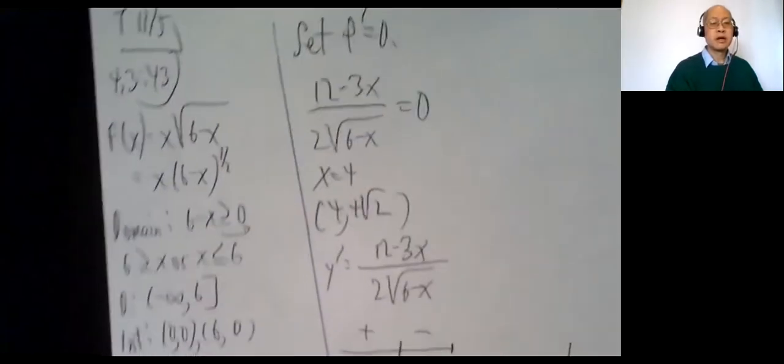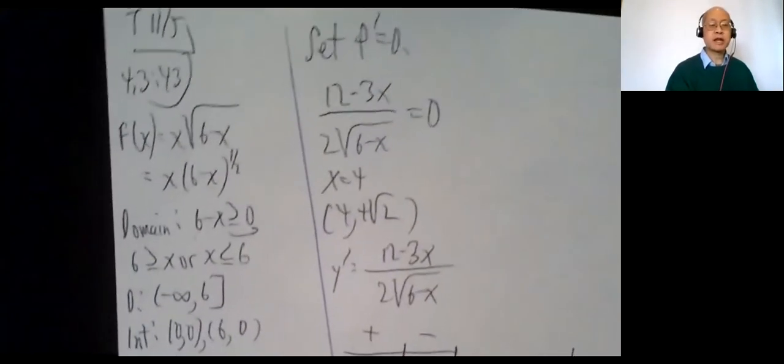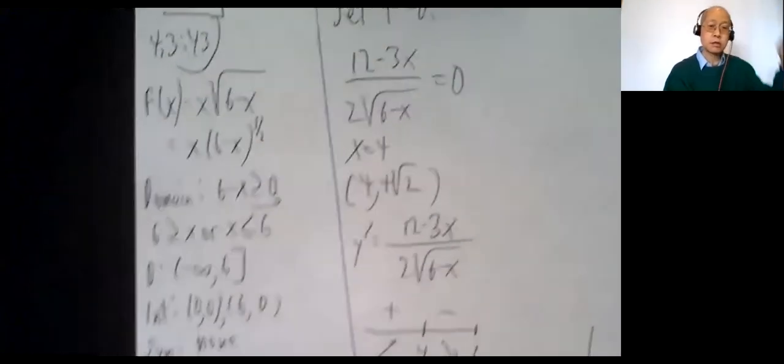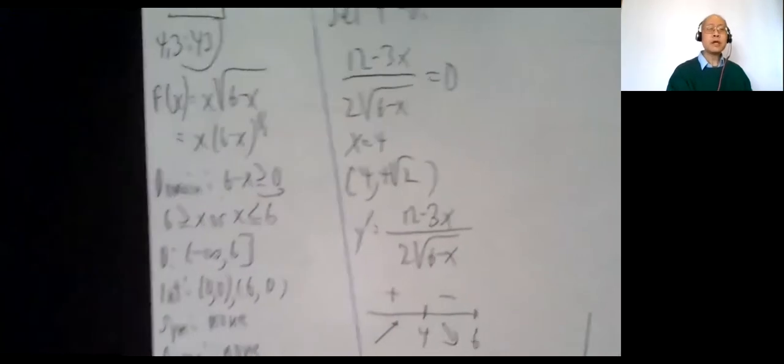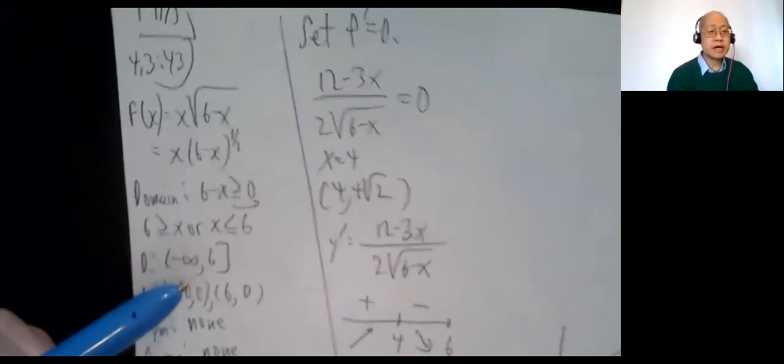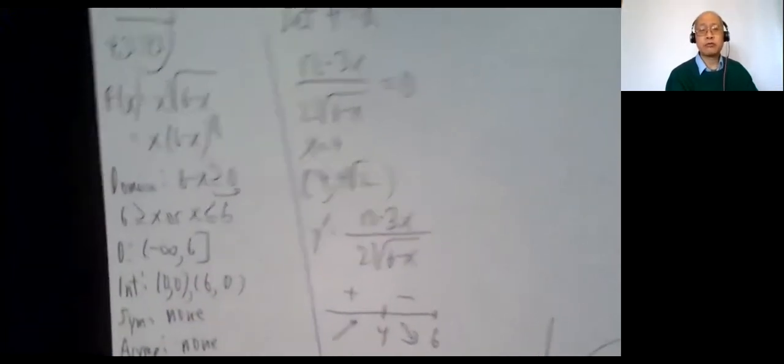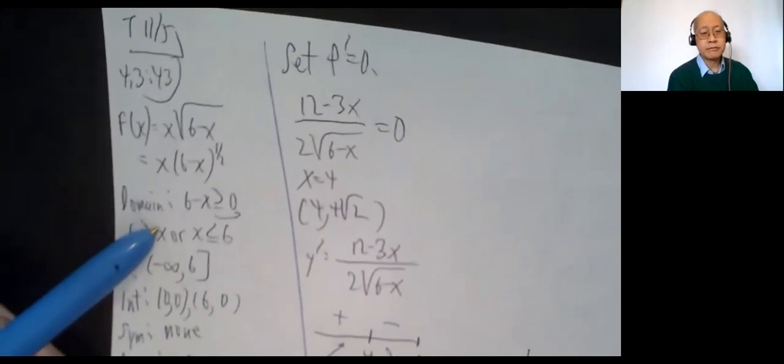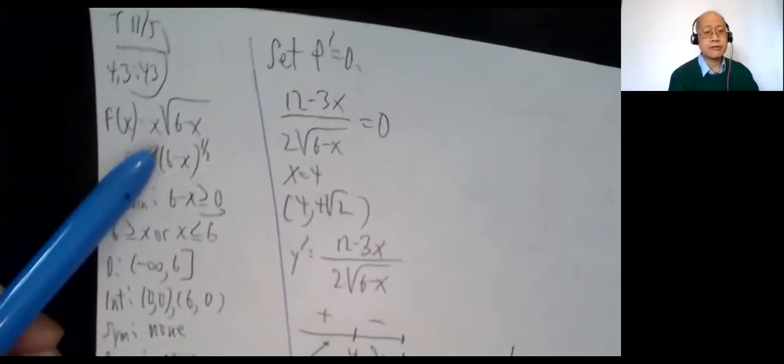Now for some curve sketch problems — these are definitely a little bit harder. 4.3 question 43: f(x) = x times the radical of (6 minus x). Some things we're going to analyze — this list mimics what happens in section 4.5, which has a lot of that stuff. It's a good idea to consider the domain first.